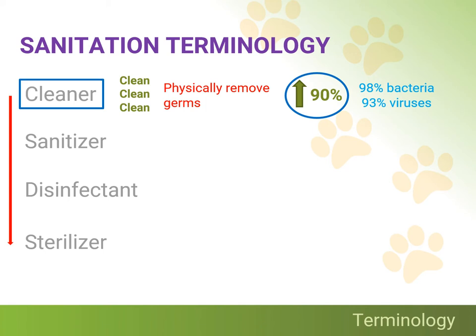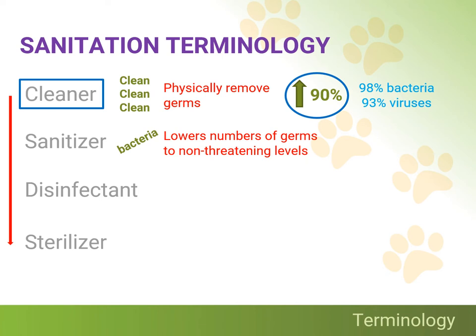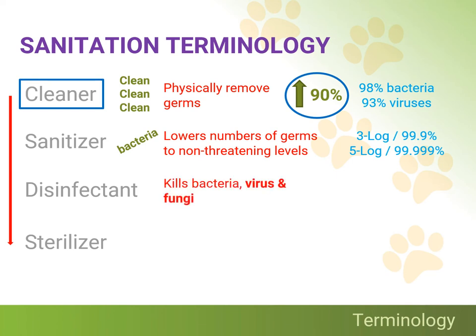Sanitizers are chemical agents that lower the number of germs — speaking of bacteria only — to non-threatening levels by killing a percentage of these microorganisms. For non-food contact surfaces, the requirement for a sanitizer claim is a three-log kill, that's a 99.9% reduction in bacteria. For food contact surfaces, the requirement is for a five-log kill, 99.999%, within 30 seconds. Disinfectants are chemical agents that not only kill bacteria, but they also kill viruses and fungi, with a six-log kill requirement — that's 99.9999% of the microorganism population.